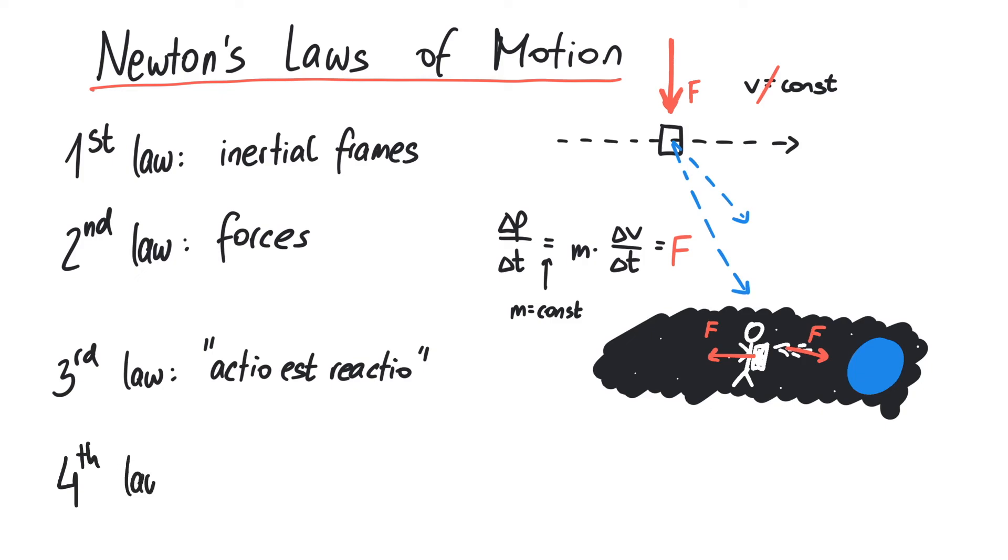Sometimes people also add a fourth law, which states that two forces acting on an object add up just like vectors do, and this is called superposition.